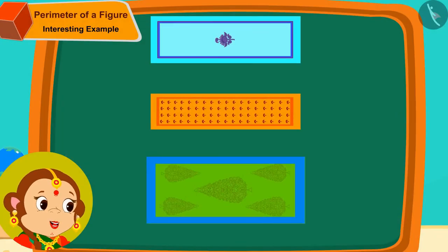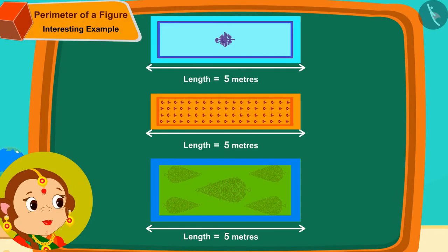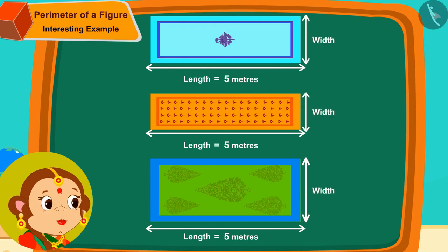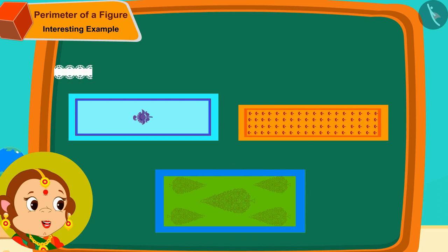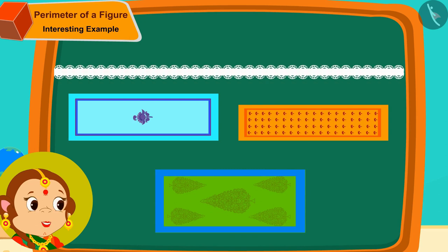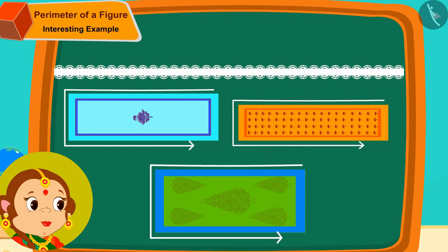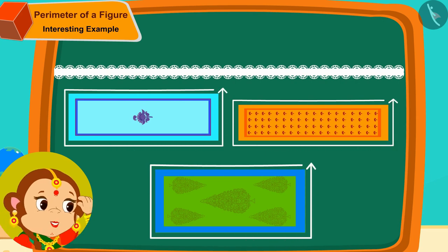All the sheets I have are 5 meters in length, but they are of different widths. Now, on which of these bedsheets should I put this 14 meter long lace, so that there's neither too little lace nor any extra lace left behind?